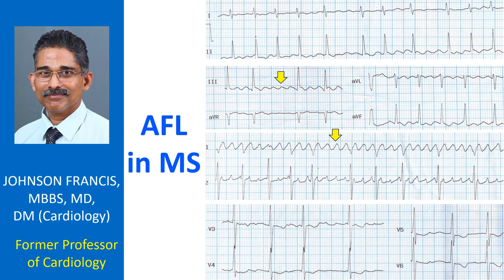The conduction ratio is varying so that the ventricular rate is irregular, resembling atrial fibrillation. The large atria in this case — both left and right atria — as there was severe pulmonary arterial hypertension secondary to severe mitral stenosis, helps the maintenance of this flutter circuit.